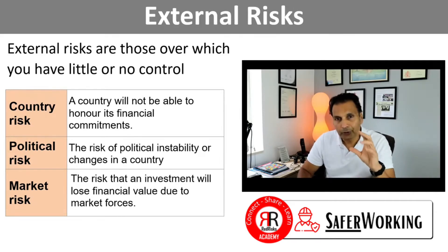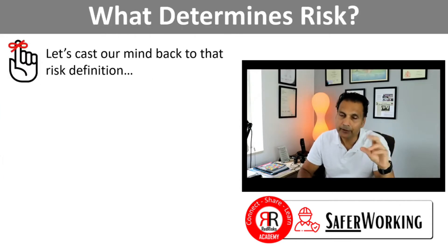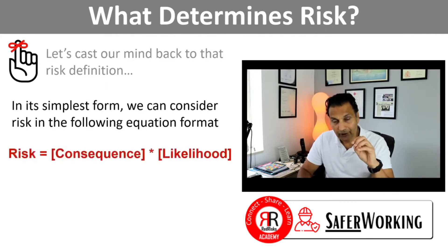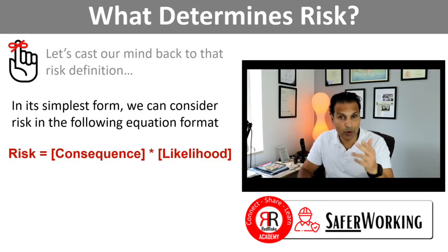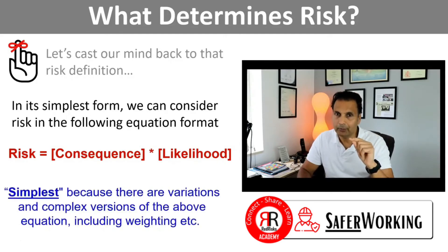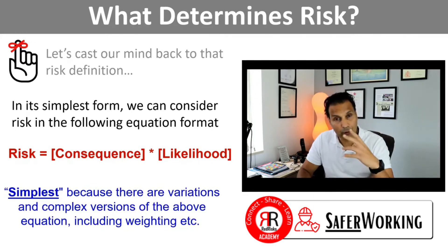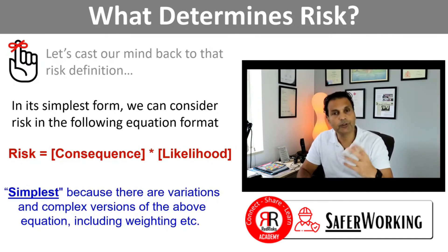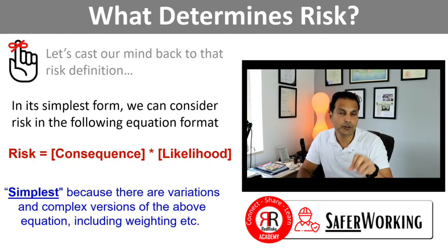But what determines risk? Let's cast our mind back to that definition of risk. In its simplest form, we can say that risk is two things: consequences and likelihood. So risk is really a product of consequences and likelihood. There are many equations you'll find on the internet with allowances for weighting and other factors, but for our purposes, let's think of it in its simplest format — the product of consequences and likelihood.